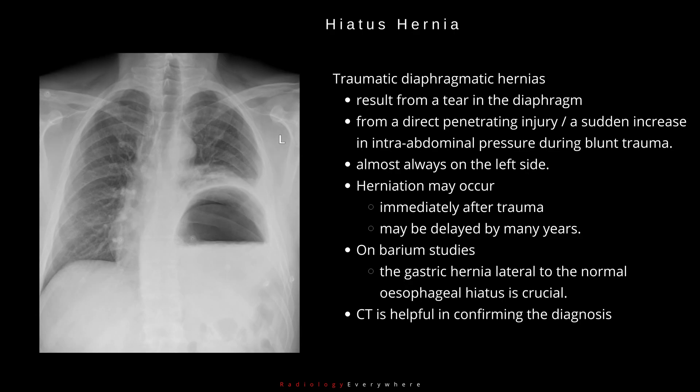Traumatic diaphragmatic hernias result from a tear in the diaphragm, either from a direct penetrating injury or from a sudden increase in intra-abdominal pressure during blunt trauma. These hernias are almost always on the left side. Herniation may occur immediately after trauma or may be delayed by many years. Diagnosis is often difficult due to lack of specificity of symptoms, and it is often confused with simple elevation of the hemidiaphragm. On barium studies, recognition of the gastric hernia lateral to the normal esophageal hiatus is crucial. CT is helpful in confirming the diagnosis.